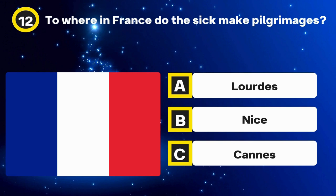Question 35. What is the capital of Ethiopia? Options: Accra, Nairobi, Addis Ababa. The answer: Addis Ababa.